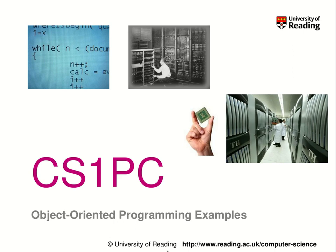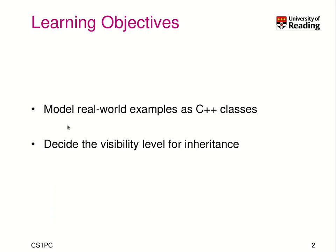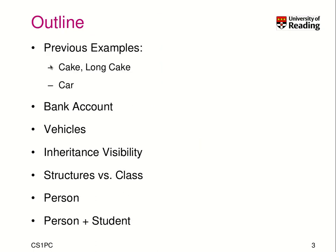Today I will give more examples about object-oriented programming in C++. If you didn't get all the details before, we will go over a lot of examples to illustrate the capabilities of object-oriented programming so you can grasp the key concepts. Today you will see more real-world examples to understand how we can model using object-oriented principles. We will look at previous examples and some new ones: bank account, vehicles. A new concept we will discuss is the visibility of inheritance, and we will compare structures versus classes, and look at more examples — persons and students.